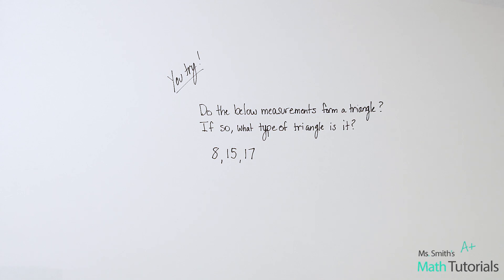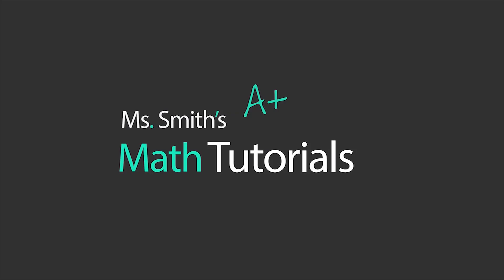You guys try this one. So it says, do the below measurements form a triangle? So that would be yes or no. Do these measurements, 8, 15, and 17, is it possible that they form a triangle? And if yes, if so, what type of triangle is it? So you need to be able to tell me, is it an acute, is it an obtuse, or is it a right triangle, aka Pythagorean triple? I will post the answer in the video description below. This has been Miss Smith's Math Tutorials.